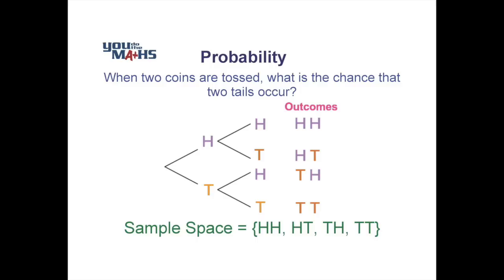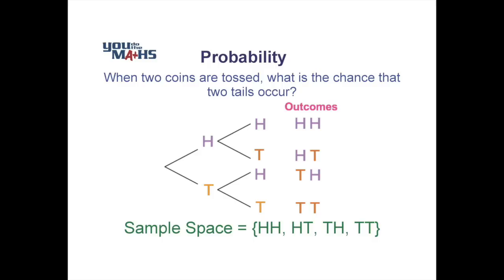Let's have a look at the probabilities of some different cases. Here we're looking at the probability of getting two tails — the event is getting two tails on the toss of two coins. There is one favourable outcome, as we can see from our sample space, out of four possibilities. So the probability of getting two tails is one out of four.